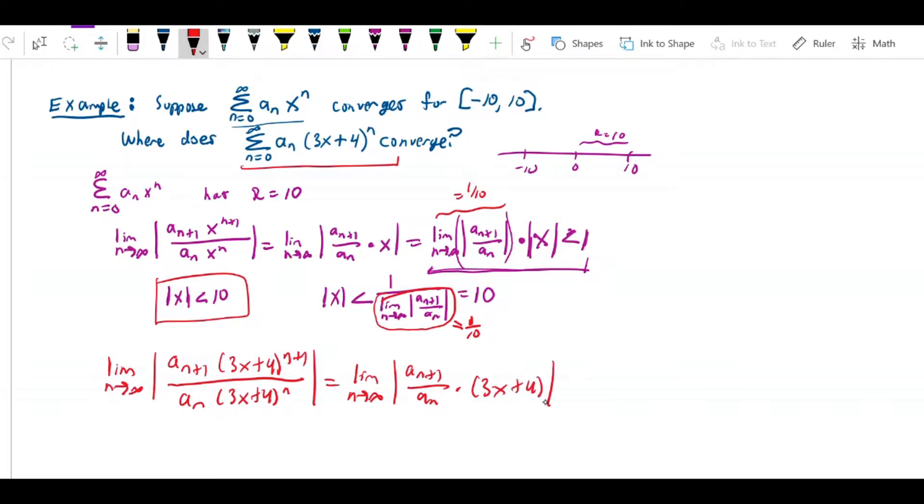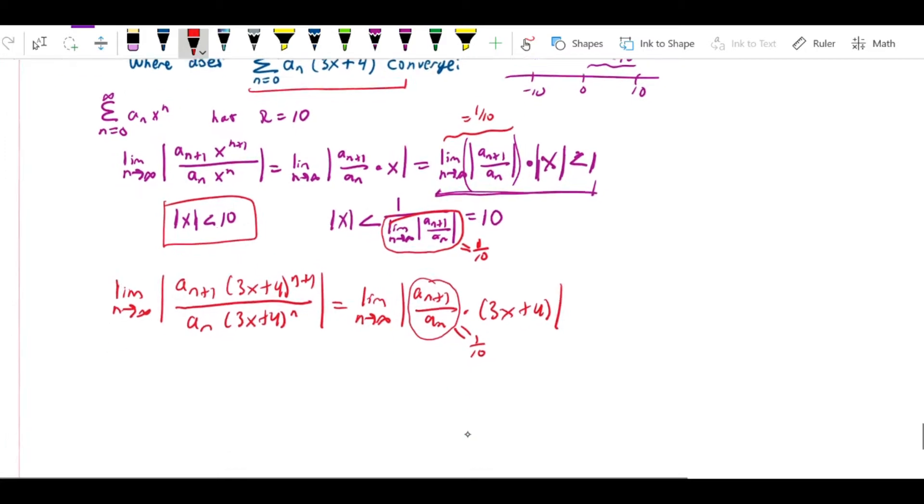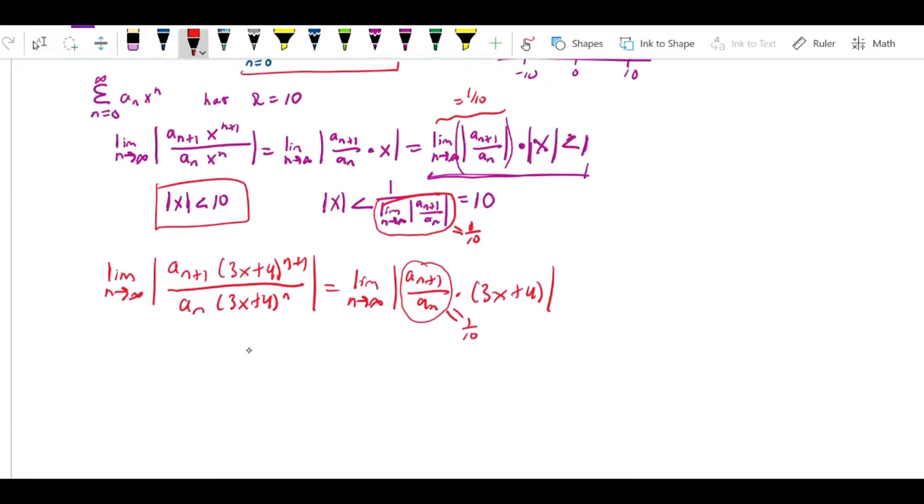But the thing is, now we're not blind as to what this means. We know that this means that this has to be equal to 1 over 10. So, now what I can do is I can rewrite this inequality. Say, this is going to be equal to 1 over 10 times |3x+4|, and that has to be less than 1.